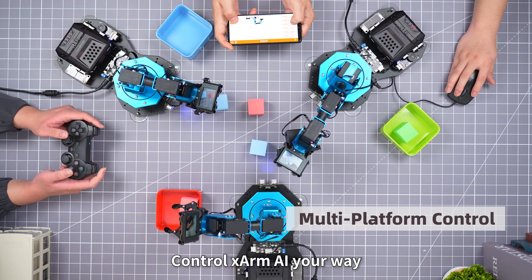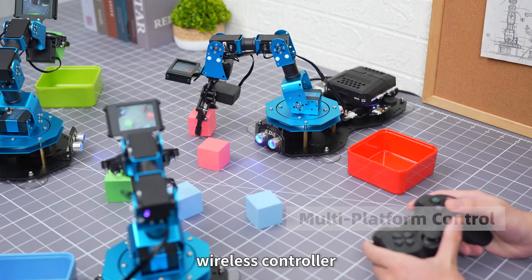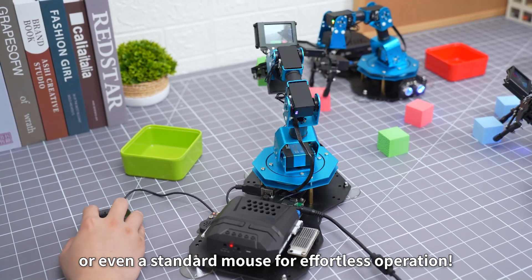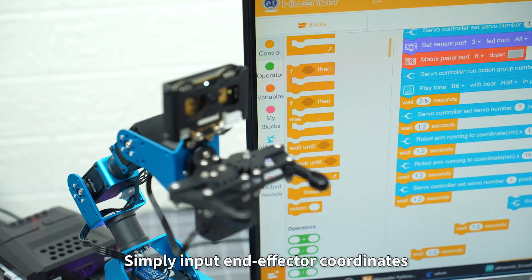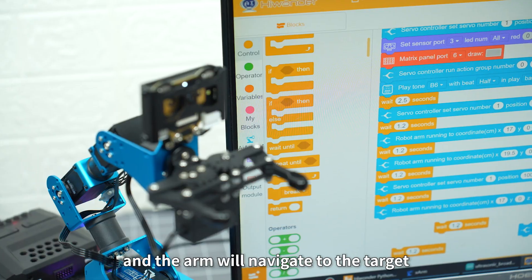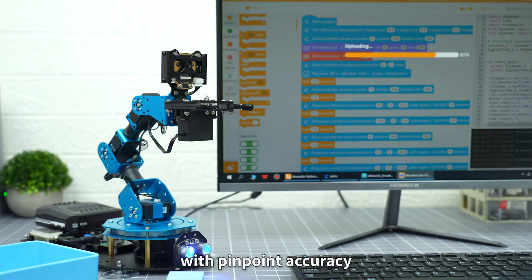Control X-Arm AI your way. Use the app, wireless controller, or even a standard mouse for effortless operation. Simply input end effector coordinates and the arm will navigate to the target with pinpoint accuracy.